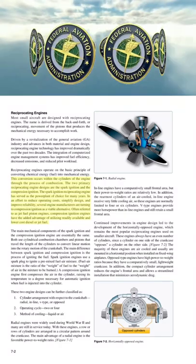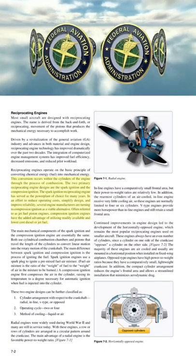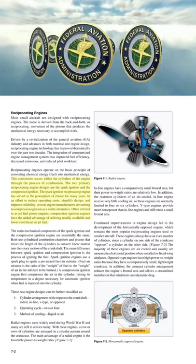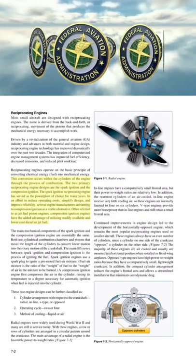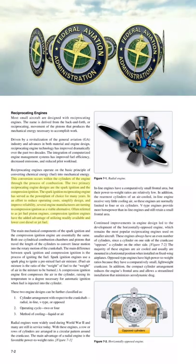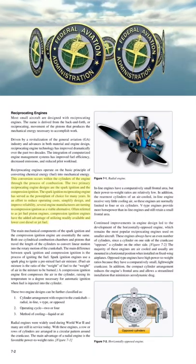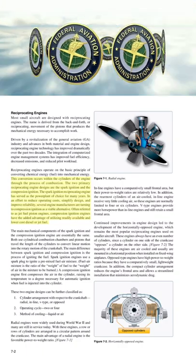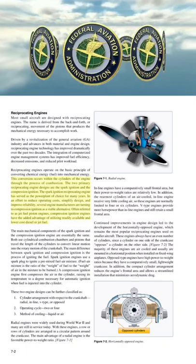The two primary reciprocating engine designs are the spark ignition and the compression ignition. The spark ignition reciprocating engine has served as the powerplant of choice for many years. Several engine manufacturers are turning to compression ignition as a viable alternative to reduce operating costs, simplify design, and improve reliability. Often referred to as jet fuel piston engines, compression ignition engines have the advantage of utilizing readily available and lower-cost diesel or jet fuel.